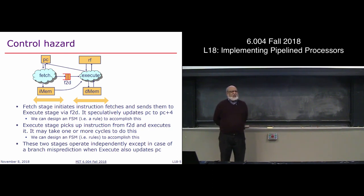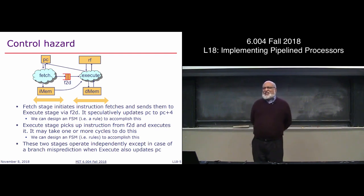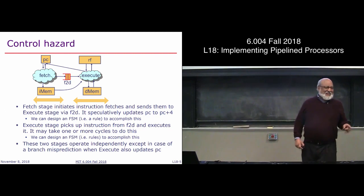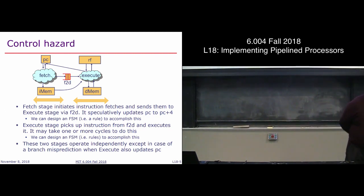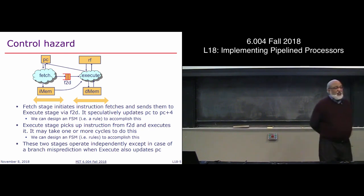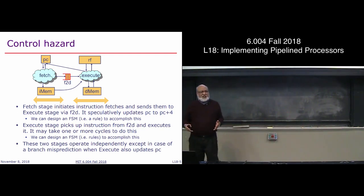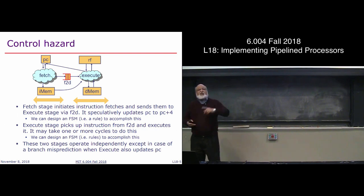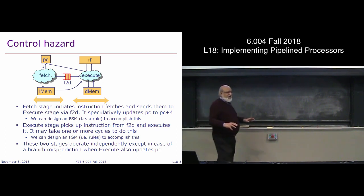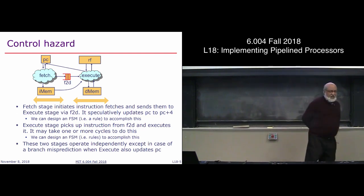How do they interact in the case of a branch? We are merely speculating in the fetch part, updating the PC. But the real story is in execute. As long as our guesses are right, no problem. But suppose our guess is wrong — then we have to do something and write the new PC. There is a curious interaction: these two parts are not independent, they affect each other. That's the control hazard problem. Let's see how to solve it.